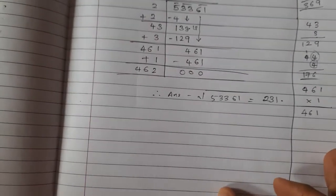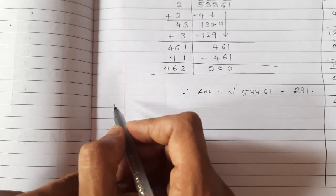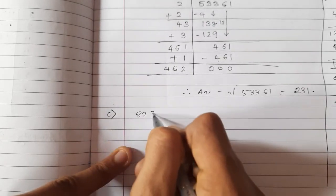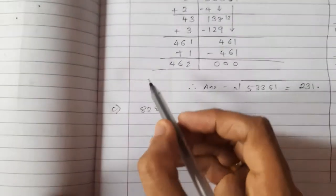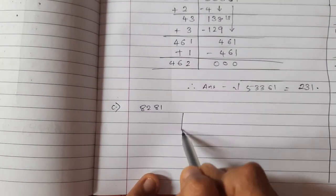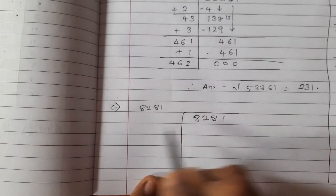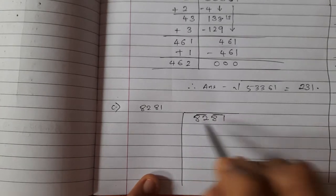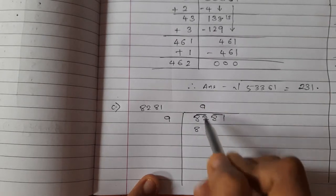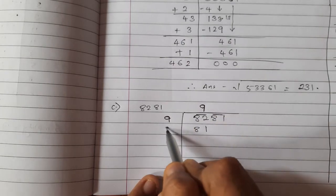One more sum — let me take a small sum: 8281. If I want to find the square root of 8281, first step is making groups: 82 and 81. Now 9 × 9 = 81, but 81 is nearest perfect square less than or equal to 82 — actually 9 × 9 = 81, so write 9 three times.